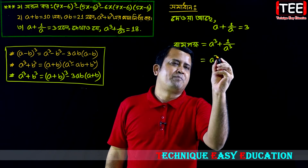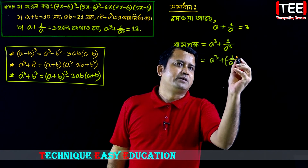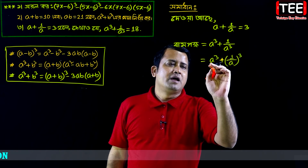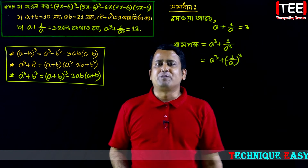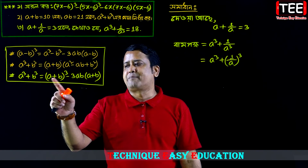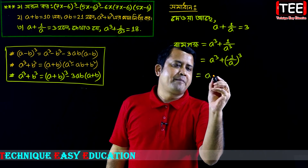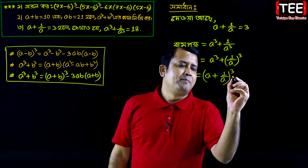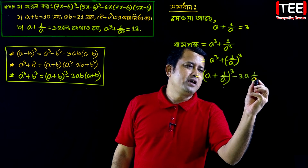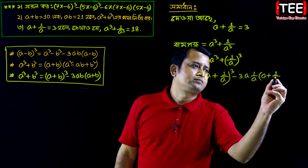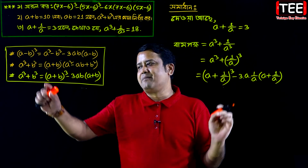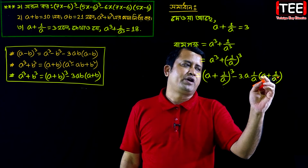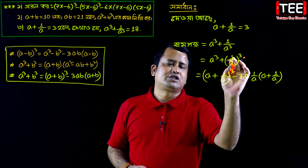We use the identity: a cube plus b cube equals a plus b whole cube minus 3ab into a plus b, where b equals 1 by a. Here a times 1 by a equals 1, so ab equals 1. We apply the formula: a plus 1 by a whole cube minus 3 into 1 into a plus 1 by a.